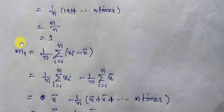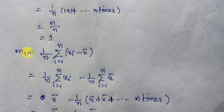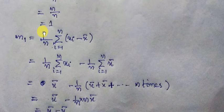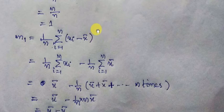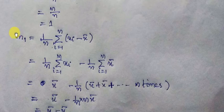Now we calculate the first central moment, m subscript 1. This equals (1/n) summation over i=1 to n of (xᵢ − x̄) to the power 1, which simplifies to (1/n) summation over i=1 to n of (xᵢ − x̄).